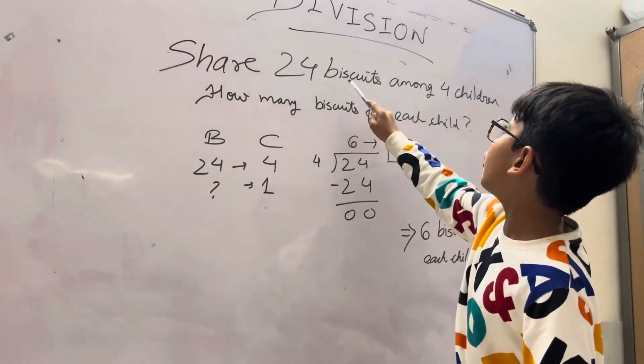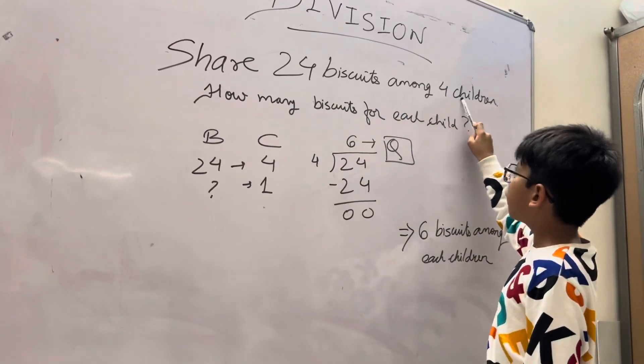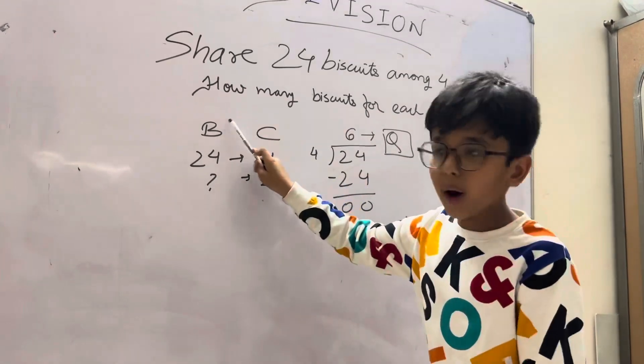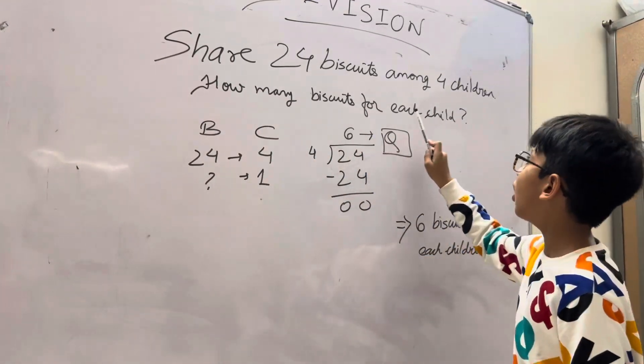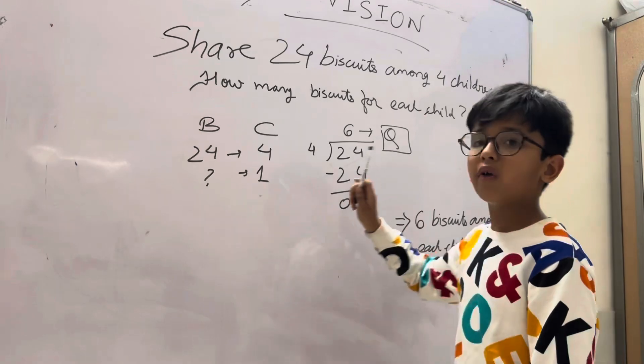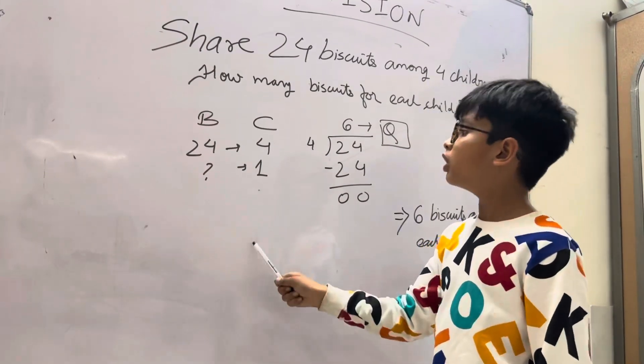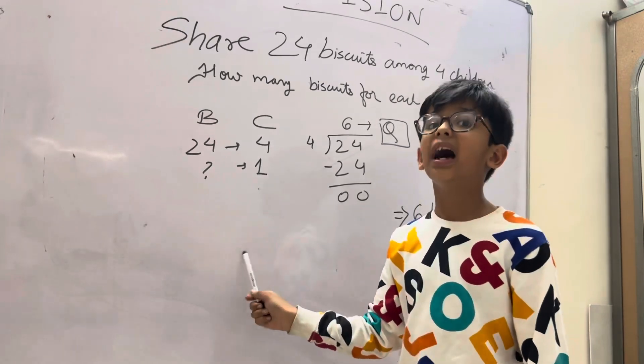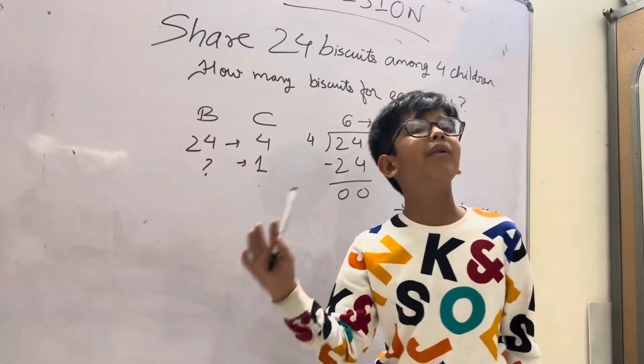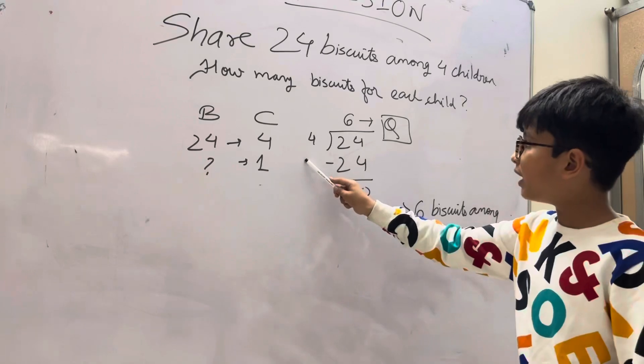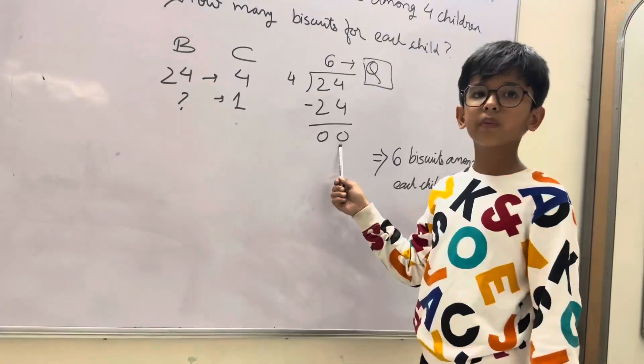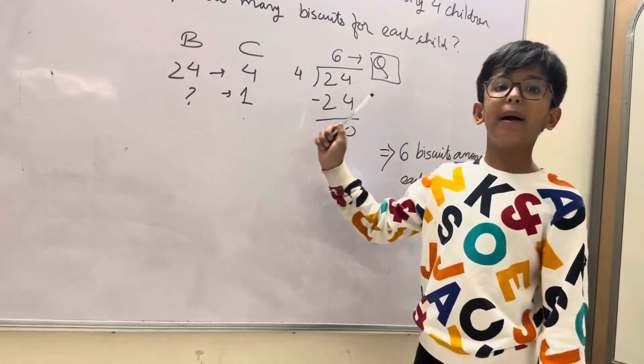Third question: Share 24 biscuits among 4 children. How many biscuits for each child? So we have 24 biscuits for 4 children. So 1 child gets how many biscuits? So we have to divide 24 divided by 4.